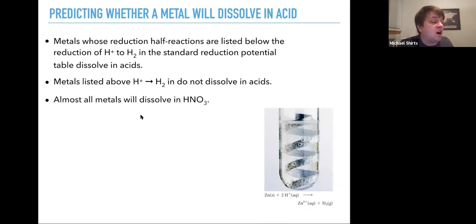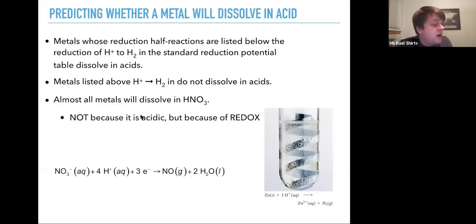Almost all metals will dissolve in nitric acid. And part of it is because of the acid, but also because of redox reaction. Nitrate in acidic solution will reduce to form nitrous oxide and water. And so what we get very commonly is that that is where the electrons go. The electrons go into reducing the nitrate.